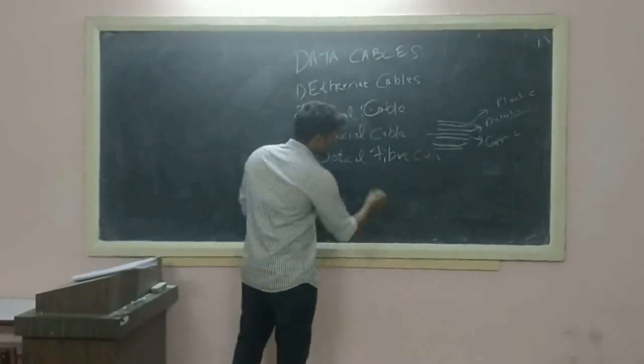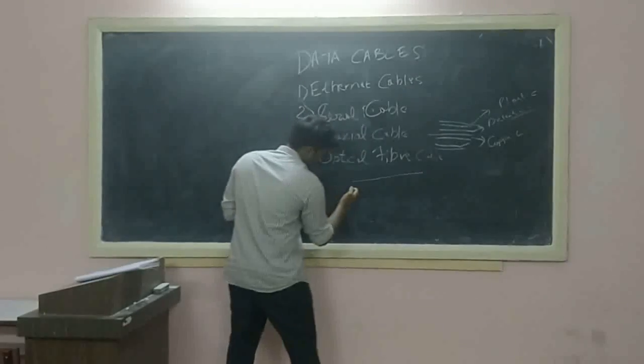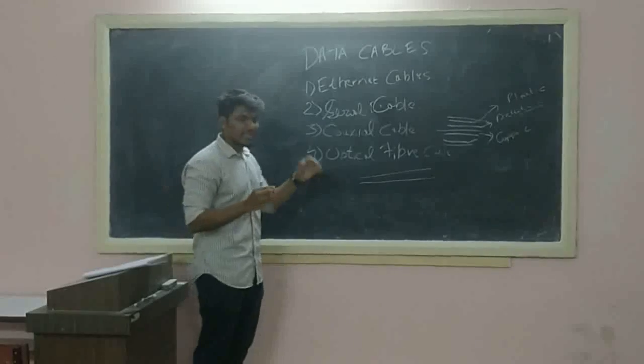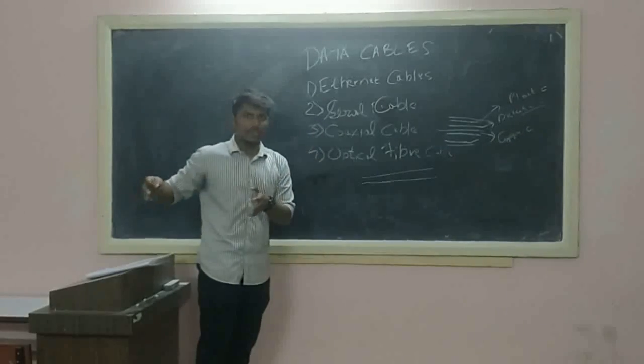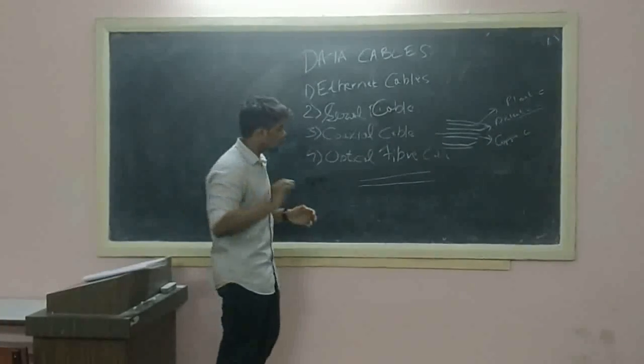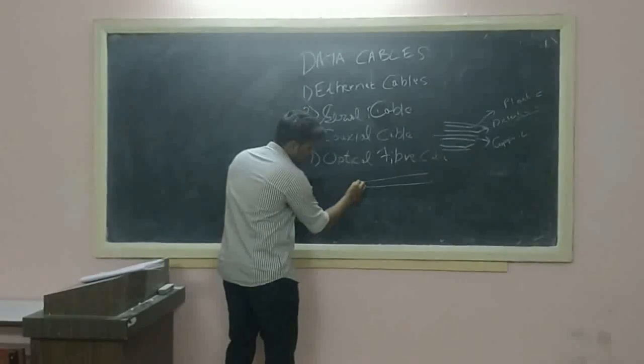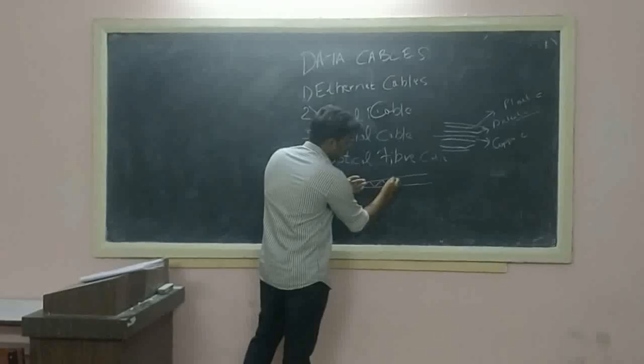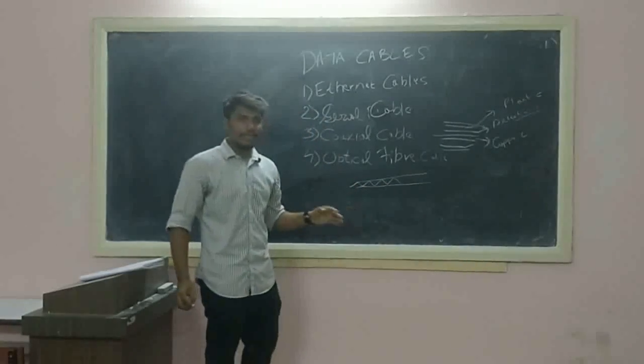In optical fiber cable, there is a core made of glass and it is used to transmit data in the form of light. When light is transmitted over the fiber, it gets reflected.